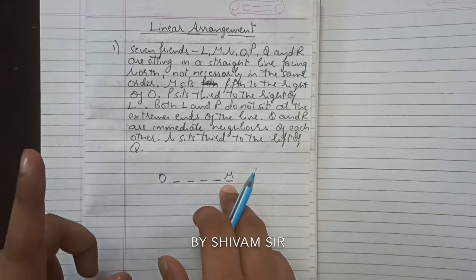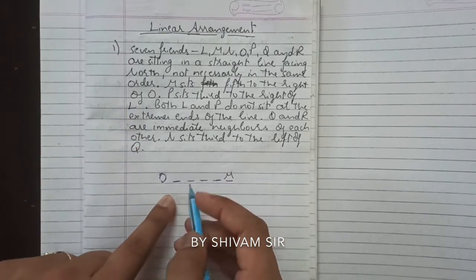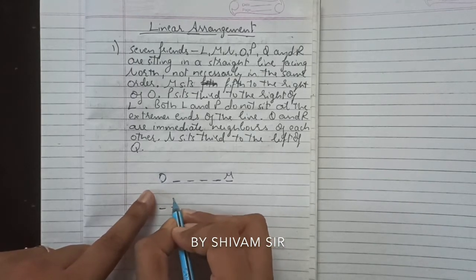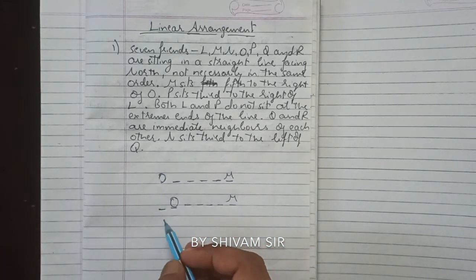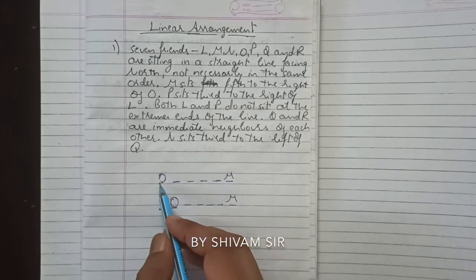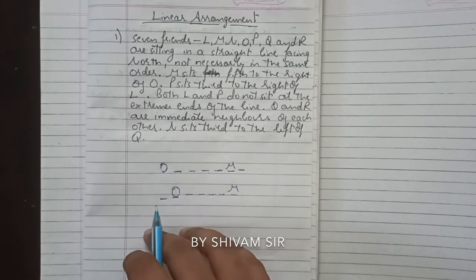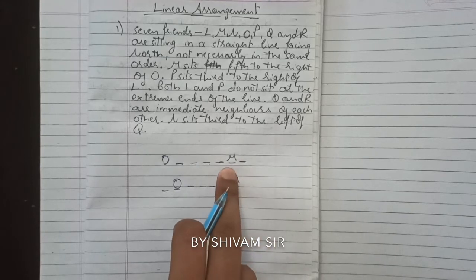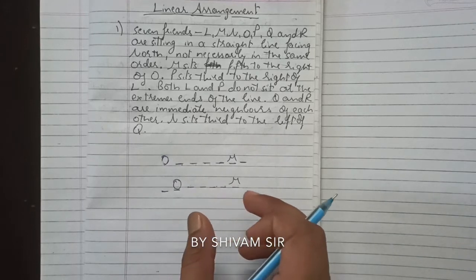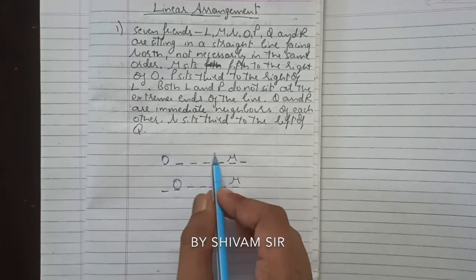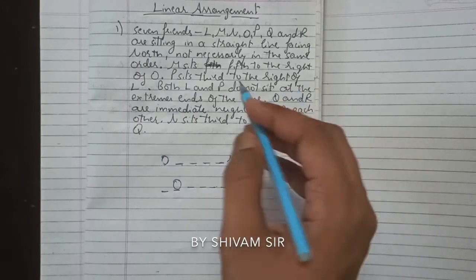There are seven persons, so M can sit at one position or another. If we place O at position 1, then 1,2,3,4,5 — M is at position 5. If O is at position 2, M is at position 6. So there are only two possibilities for M and O, because between them four people must sit. One possibility will be eliminated later.